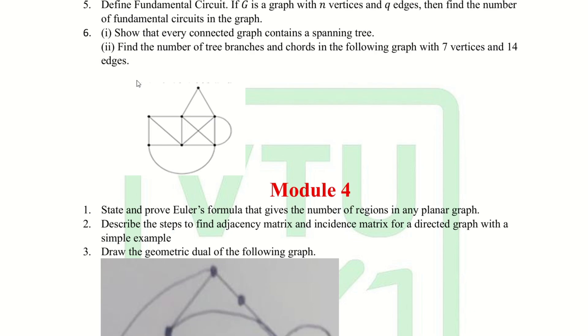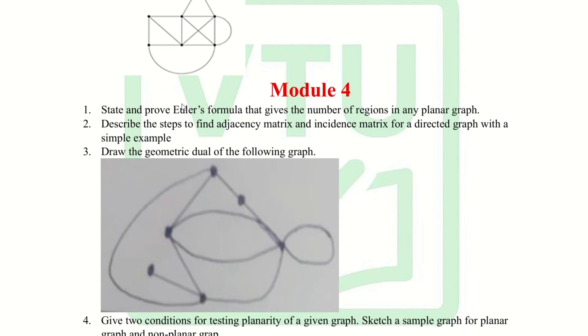The sixth question is: show that every connected graph contains a spanning tree, and find the number of tree branches in the following graph with seven vertices and 14 edges.